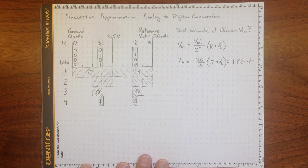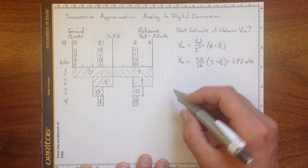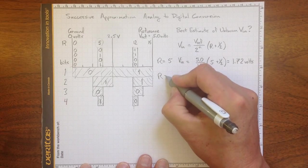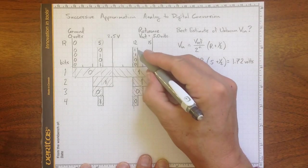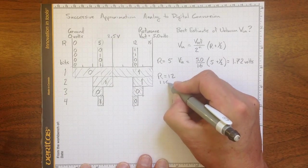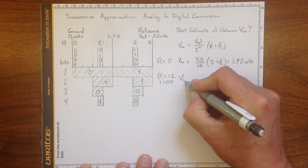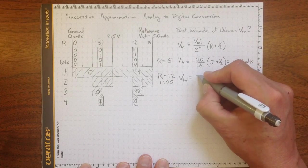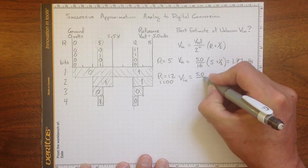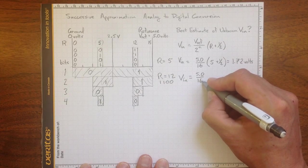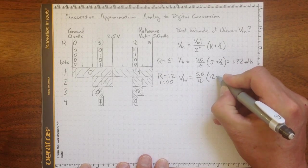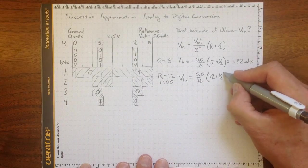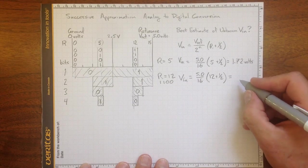Now, let's consider instead of the case where we had R equal to 5, what if we had the other one where we had R equal to 12? That was our 1100. Then we'd get Vn equal to 5 over 16, same as before. That's our range and our resolution, times 12 plus a half. That puts us in the middle of this zone here. And that equals 3.91 volts.